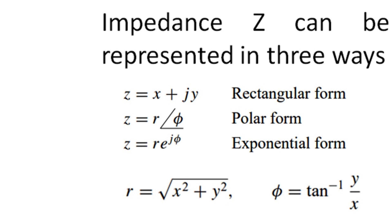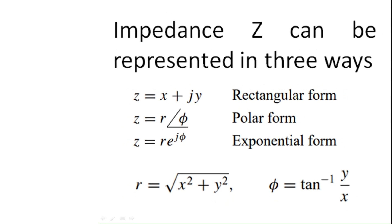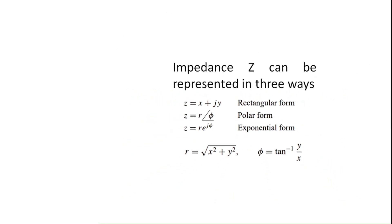Where r equals the square root of x squared plus y squared — that is, the real term squared plus imaginary term squared — and phi equals tan inverse of the imaginary part divided by the real part.